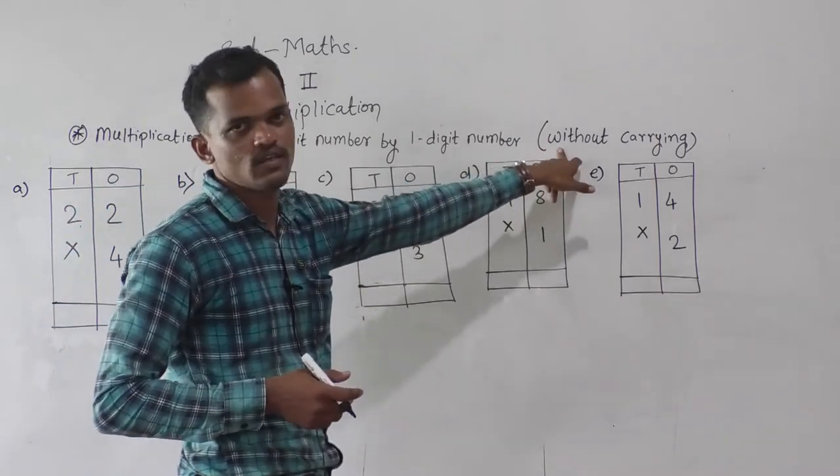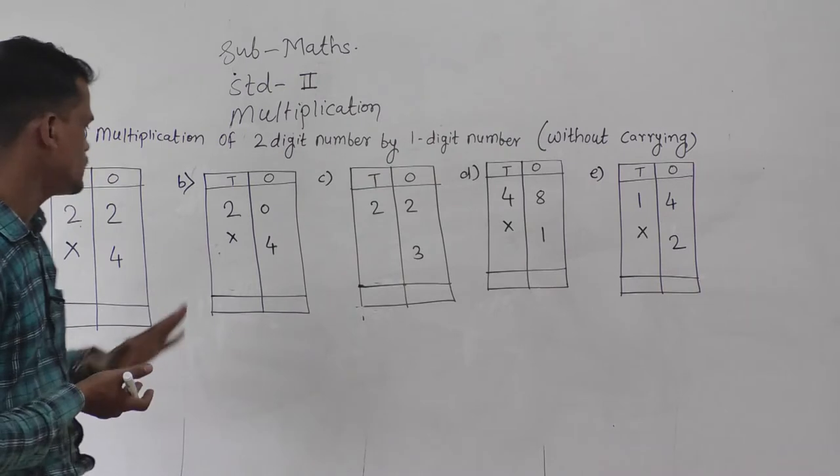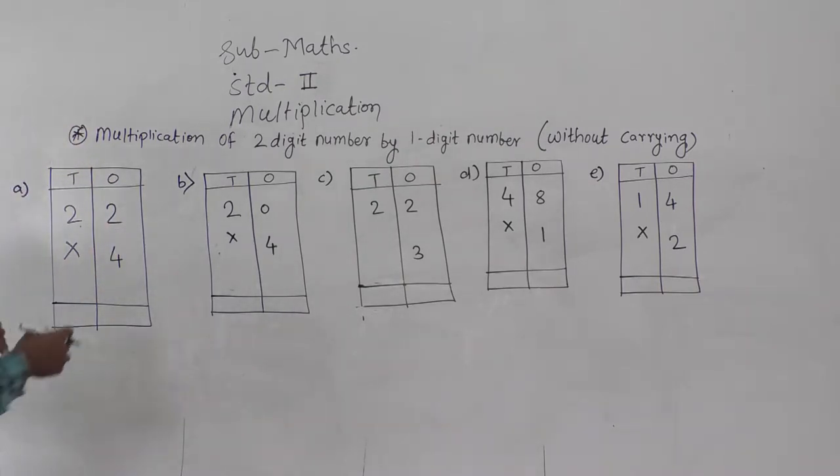This is a very simple method without carrying. There is no need to carry. See the example so you will understand. Reset the table and write the ones and tens place digits.